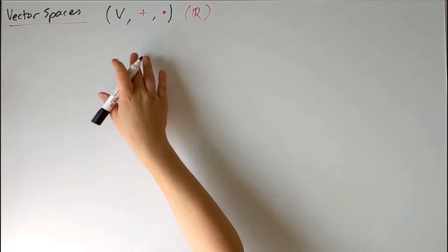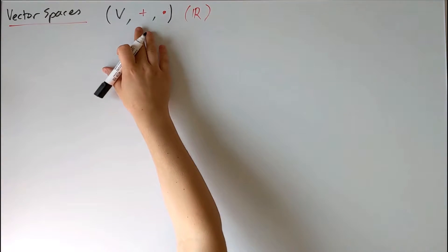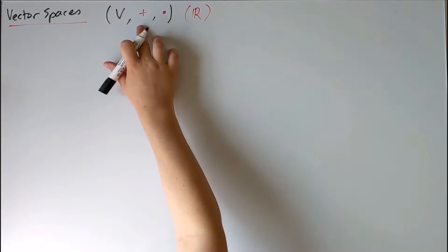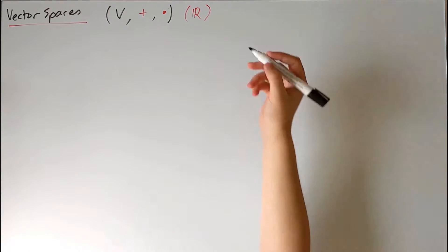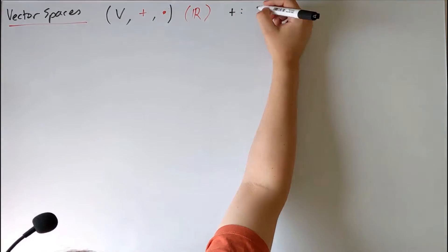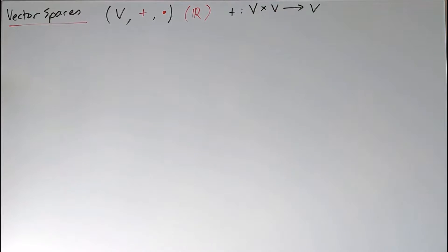So when we defined the vector space, we didn't say anything about how we actually add or scalar multiply vectors in practice, we just defined it abstractly as a map.